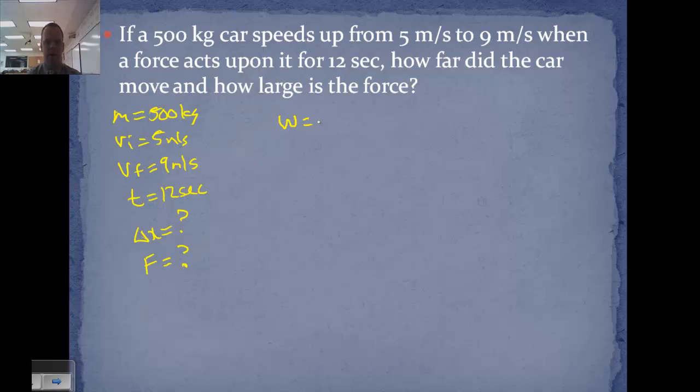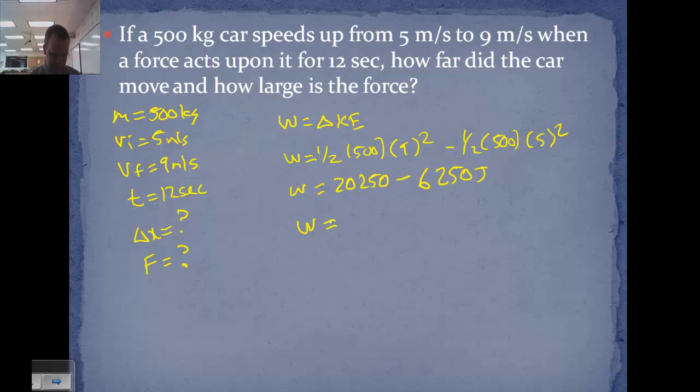So we can do a couple of things. We can do work equals change in kinetic energy. In this case, our work is 1 half 500 times 9 squared minus 1 half 500 times 5 squared. So we get work 20,250 joules minus 6,250 joules. So our work is 14,000 joules of work.